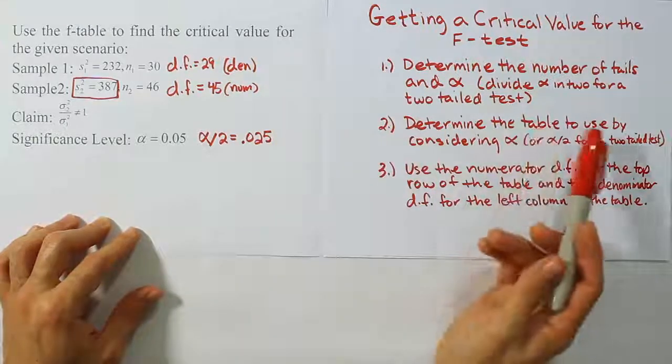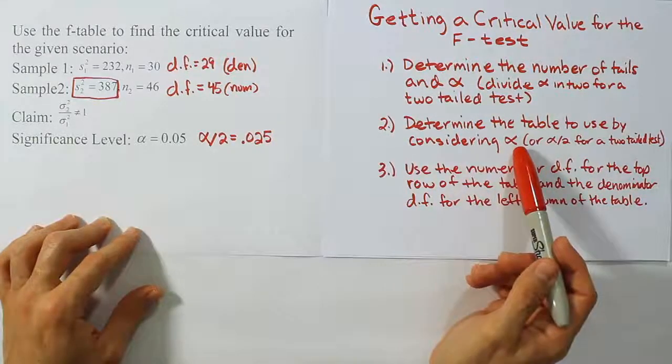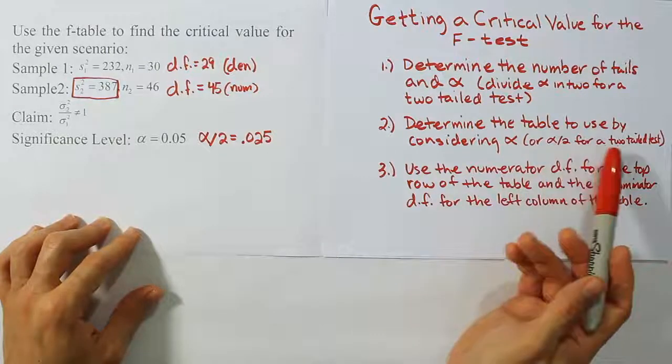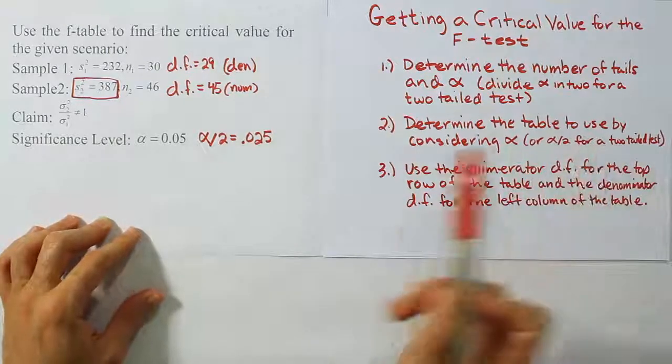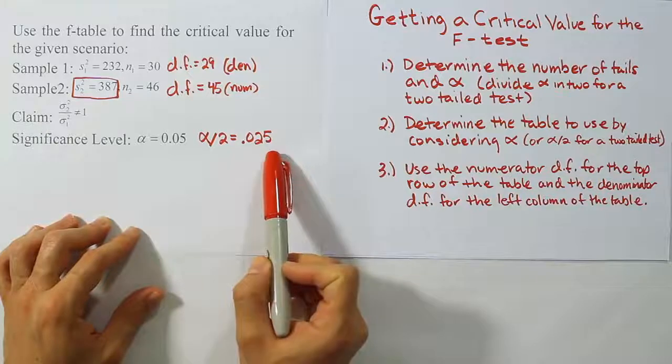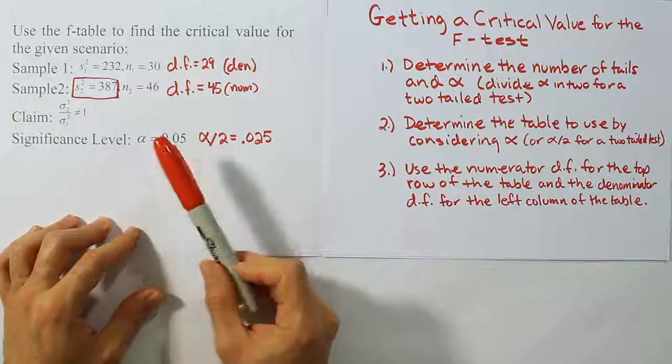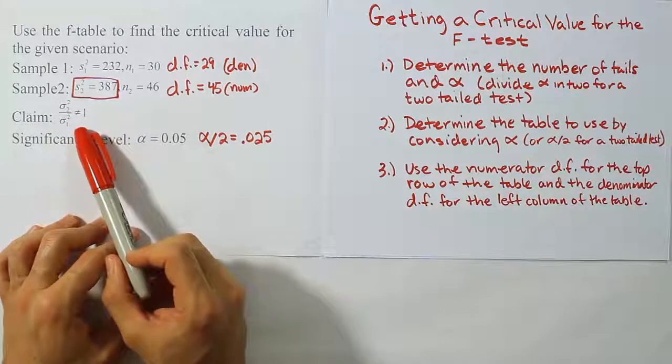Because in step two, it says determine the table to use by considering alpha, or alpha divided by two for the case of a two-tailed test. So we're actually going to go to this table instead of the 0.05 table. And that's because of the two-tailed nature of the test.